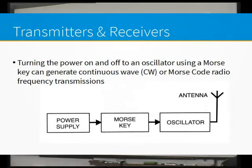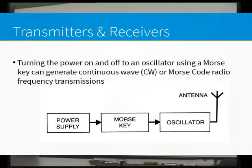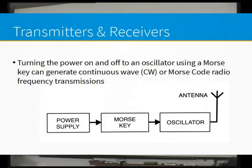Here's an example. If you trace out the circuit, you'll see that the battery goes through the Morse key to an oscillator and then to an antenna. Literally, that's as simple as you can get.